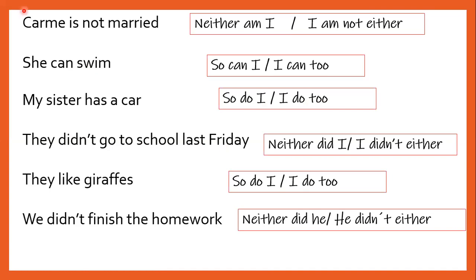'They like giraffes' — 'So do I' or 'I do too.' 'We didn't finish the homework' — 'Neither did he' or 'He didn't either.' If you notice, here we have the verb to be, here we have a modal verb, these sentences are in present simple so we use the auxiliary in present simple, and these sentences are in past so we use the auxiliary in past. So you have to match the tense of the auxiliary to the tense used by the speaker.